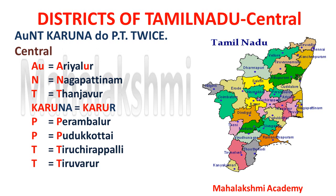The first T is for Tiruchirapalli, and the second T is for Tiruvarur. So these are the districts you can learn using the short code 'Aunt Karuna do PT twice' — twice meaning two P's and two T's. This covers all the districts in the central division.